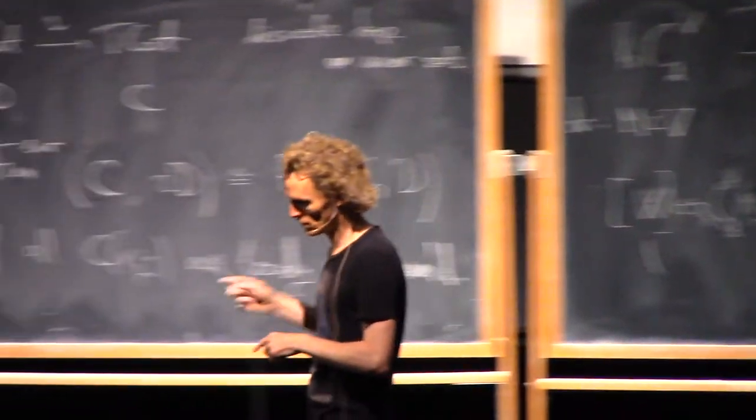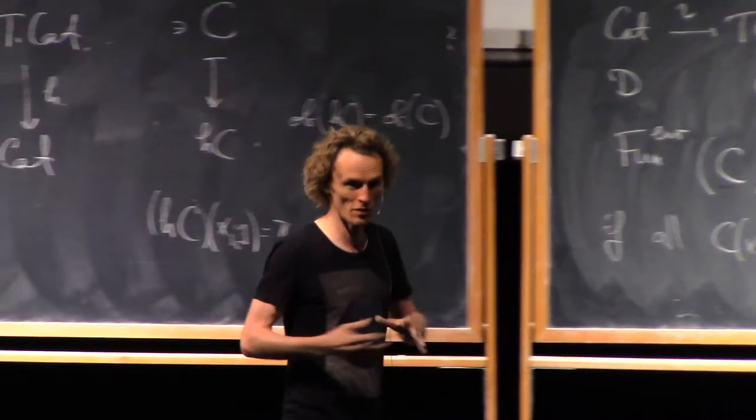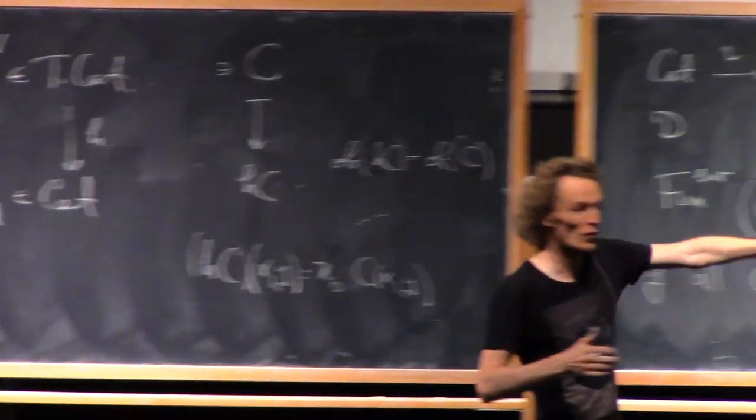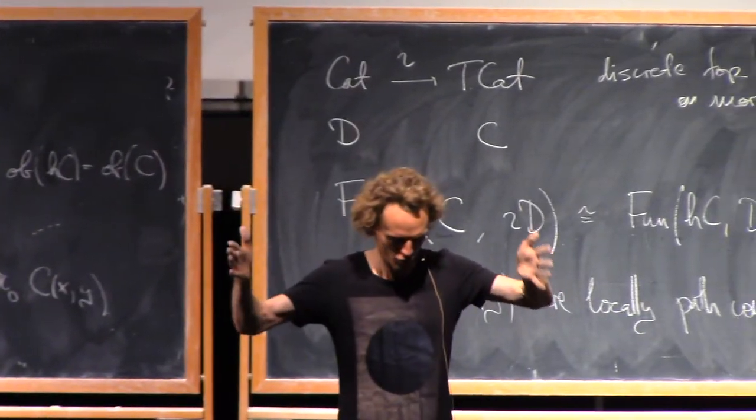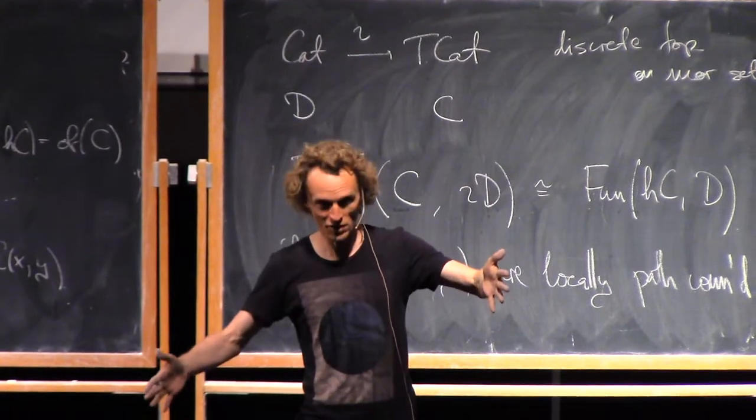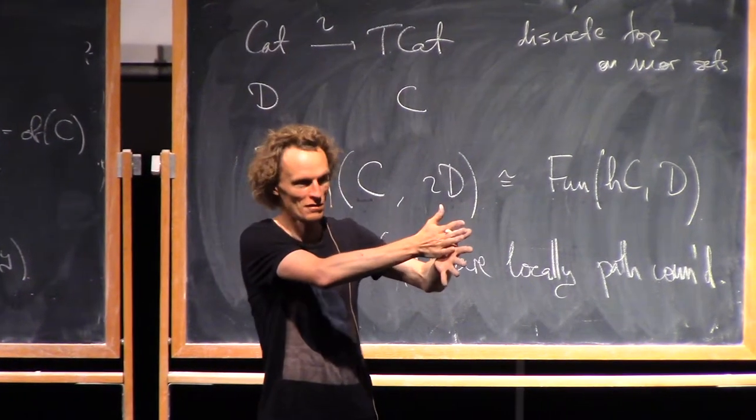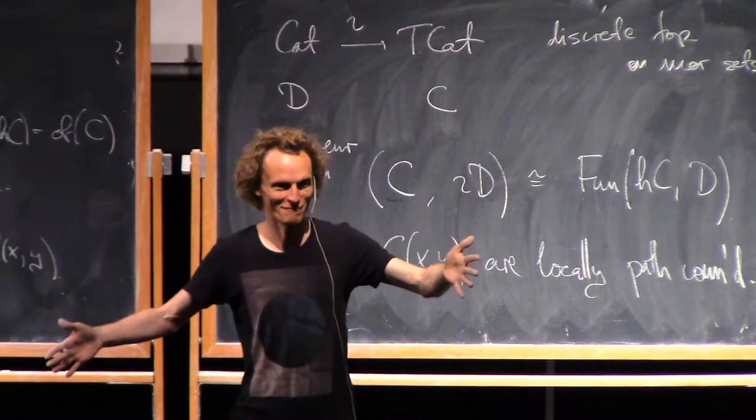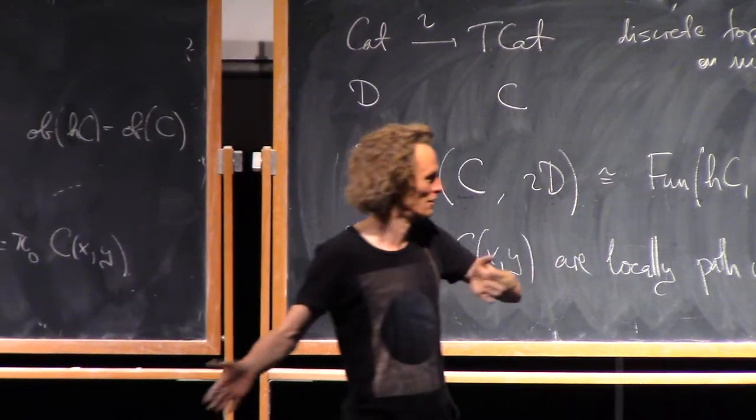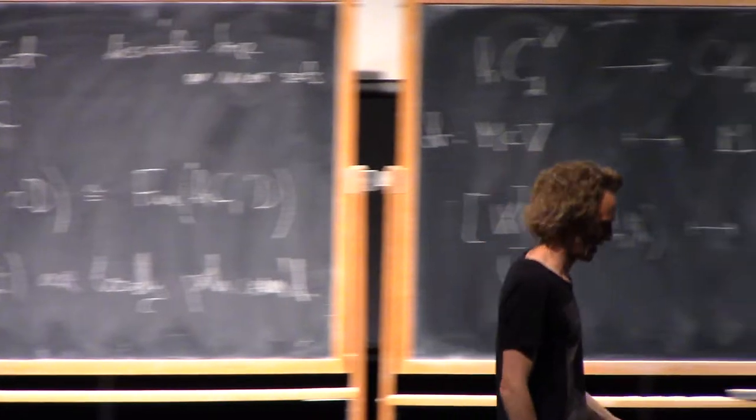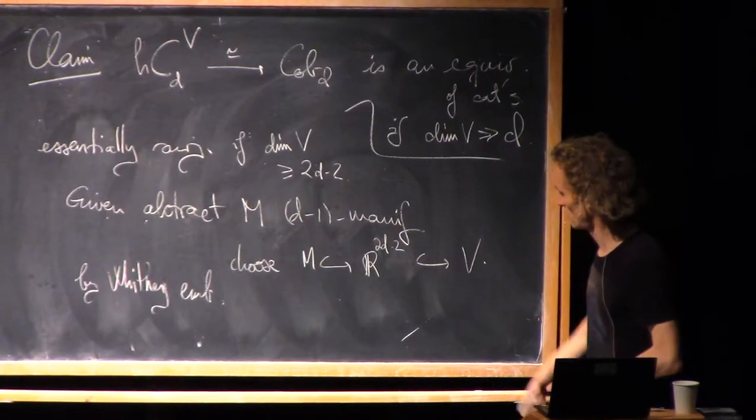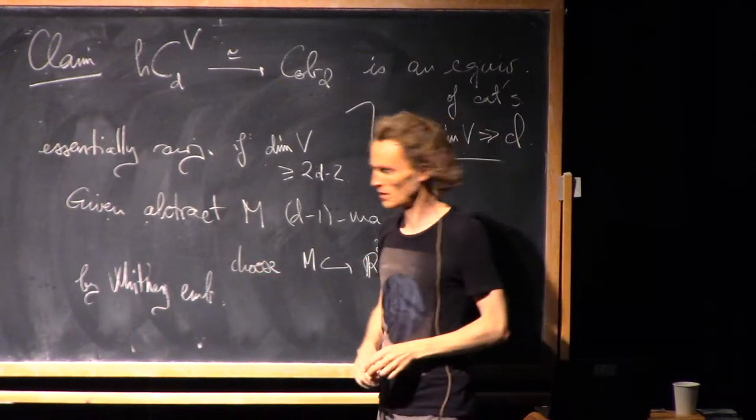Then we have to check fully faithful. Why is it full? That means surjective on hom sets. That's very similar. If I have two embedded things and I have an abstract cobordism between them, why is that the underlying thing of an embedded cobordism? Well, you need to embed that abstract thing into V cross an interval and sort of extending the given embedding of the endpoints and a version of the Whitney embedding theorem also tells you that.